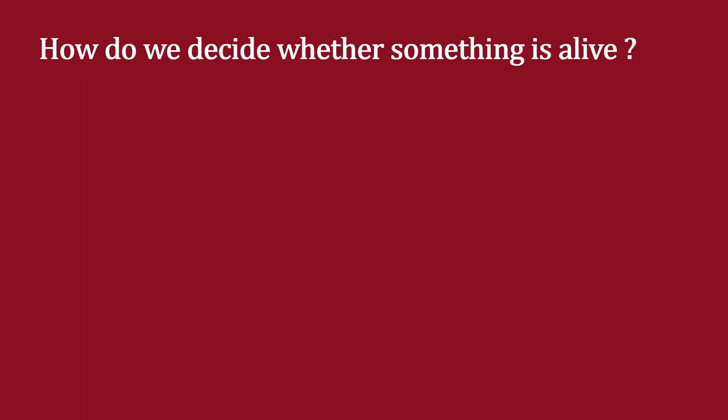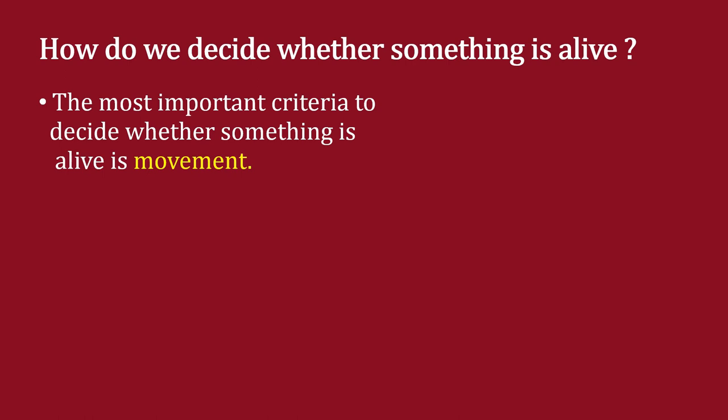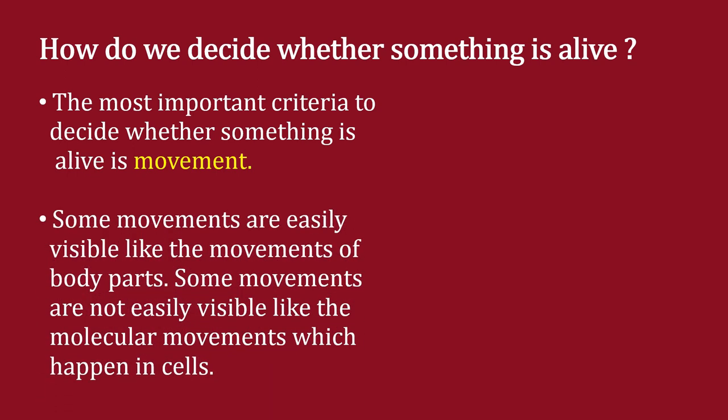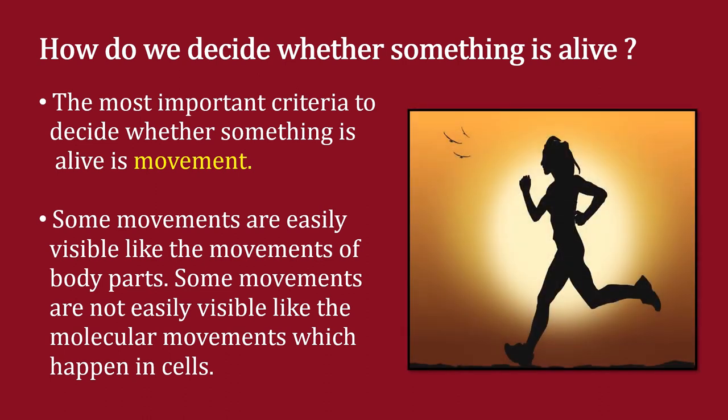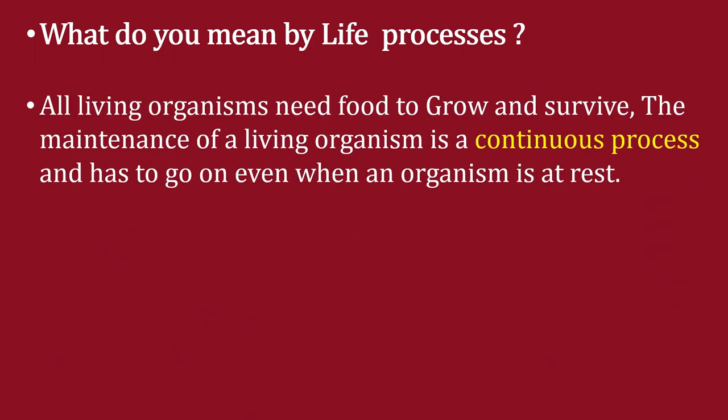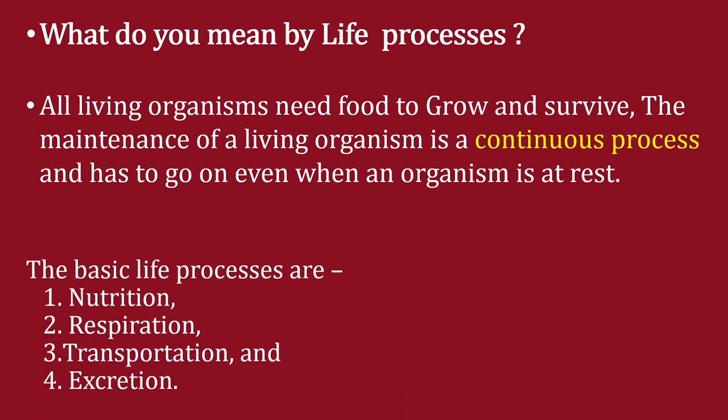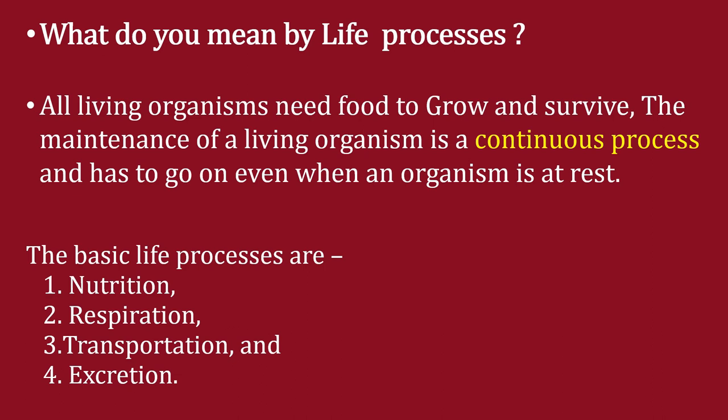How do we decide whether something is alive? The most important criteria is movement. Movement is the basic criteria to decide if something is alive. In living organisms, some movements are easily visible, like movements of body parts, while some are not easily visible, like molecular movements in cells. All living organisms need food to grow and survive. The basic life processes are nutrition, respiration, transportation, and excretion — and this is a continuous process.